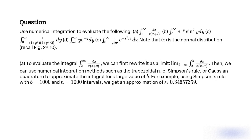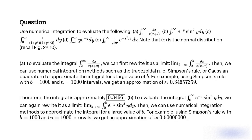We can use numerical integration methods such as the trapezoidal rule, Simpson's rule, or Gaussian quadrature to approximate the integral for a large value of b. For example, using Simpson's rule with b = 1,000 and n = 1,000 intervals, we get an approximation of 0.34657359. Therefore, the integral is approximately 0.3466.